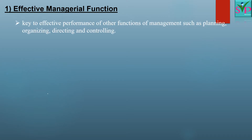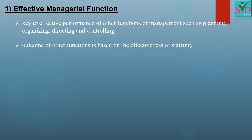Point 1: Effective managerial function. Staffing is a key to effective performance of other functions of management such as planning, organizing, directing, and controlling. The outcome of other functions is based on the effectiveness of staffing. If an organization does not have a competent workforce, it cannot perform other functions of management properly. There is a need of efficient workforce to work effectively in different areas like production, finance, sales, etc. Therefore, there is a need of appointing the right person at the right position with the right pay for various positions in the organization.